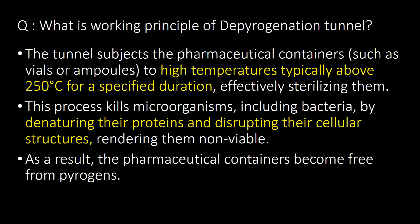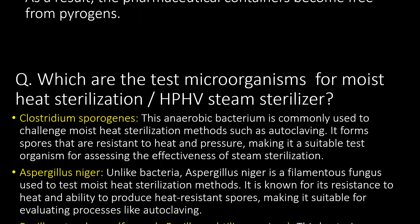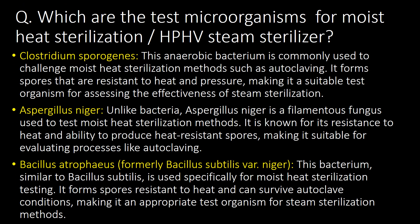What is the working principle of a depyrogenation tunnel? The tunnel subjects pharmaceutical containers such as vials or ampoules to high temperatures, typically about 250°C, for a specified duration, effectively sterilizing them. This process kills microorganisms including bacteria by denaturing their proteins and disrupting their cellular structures, rendering them non-viable. As a result, the pharmaceutical containers become free from pyrogens.